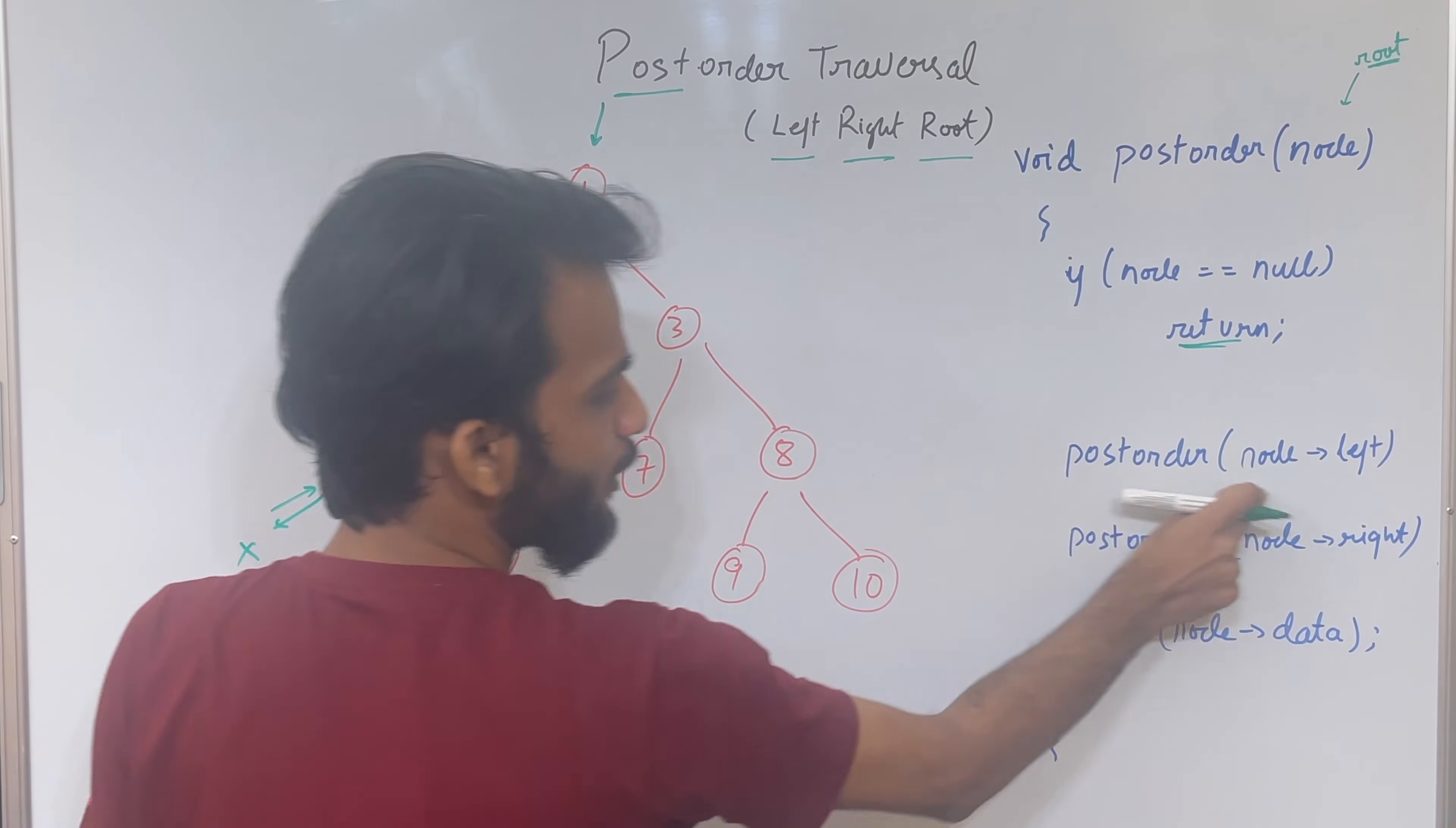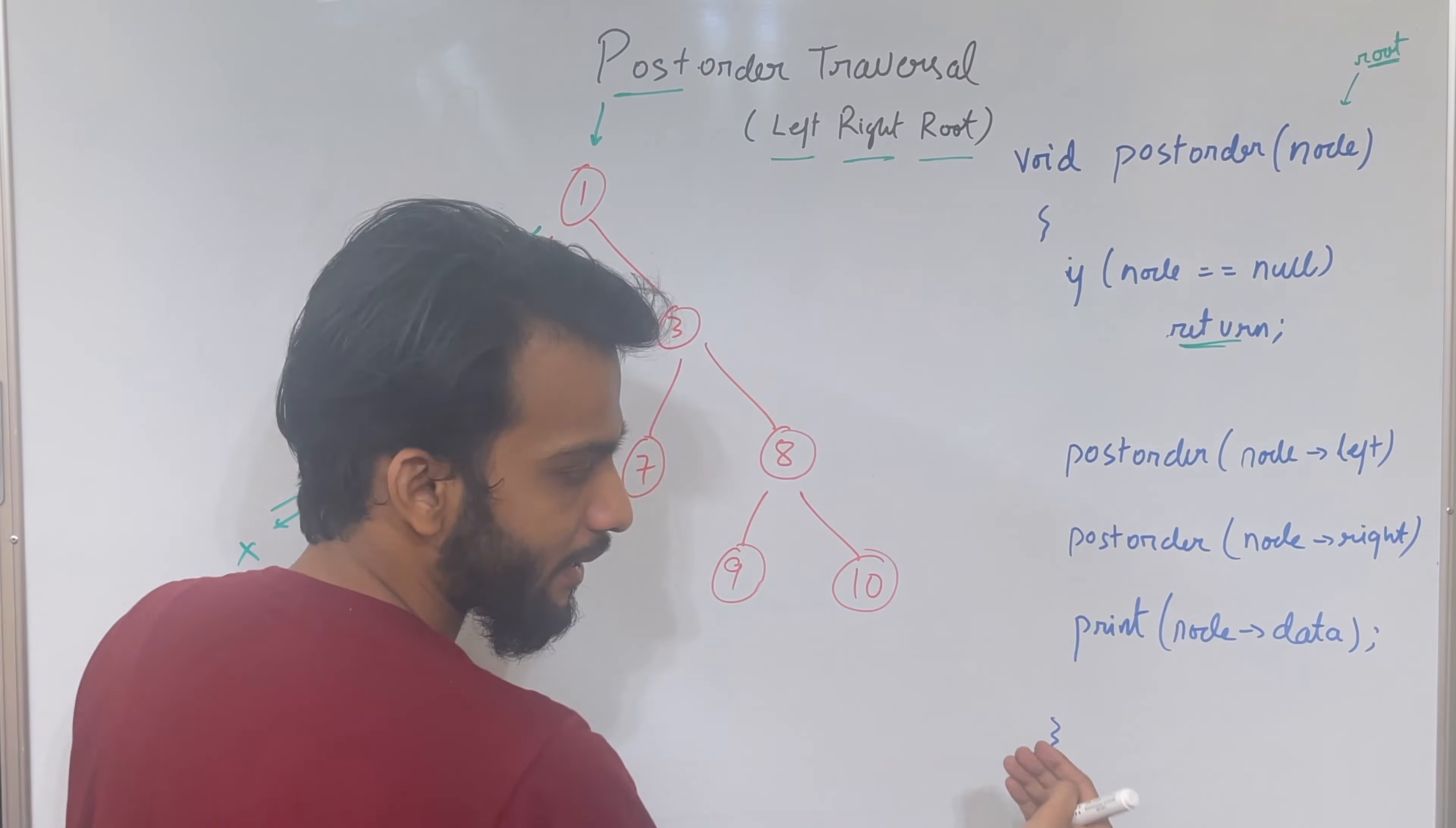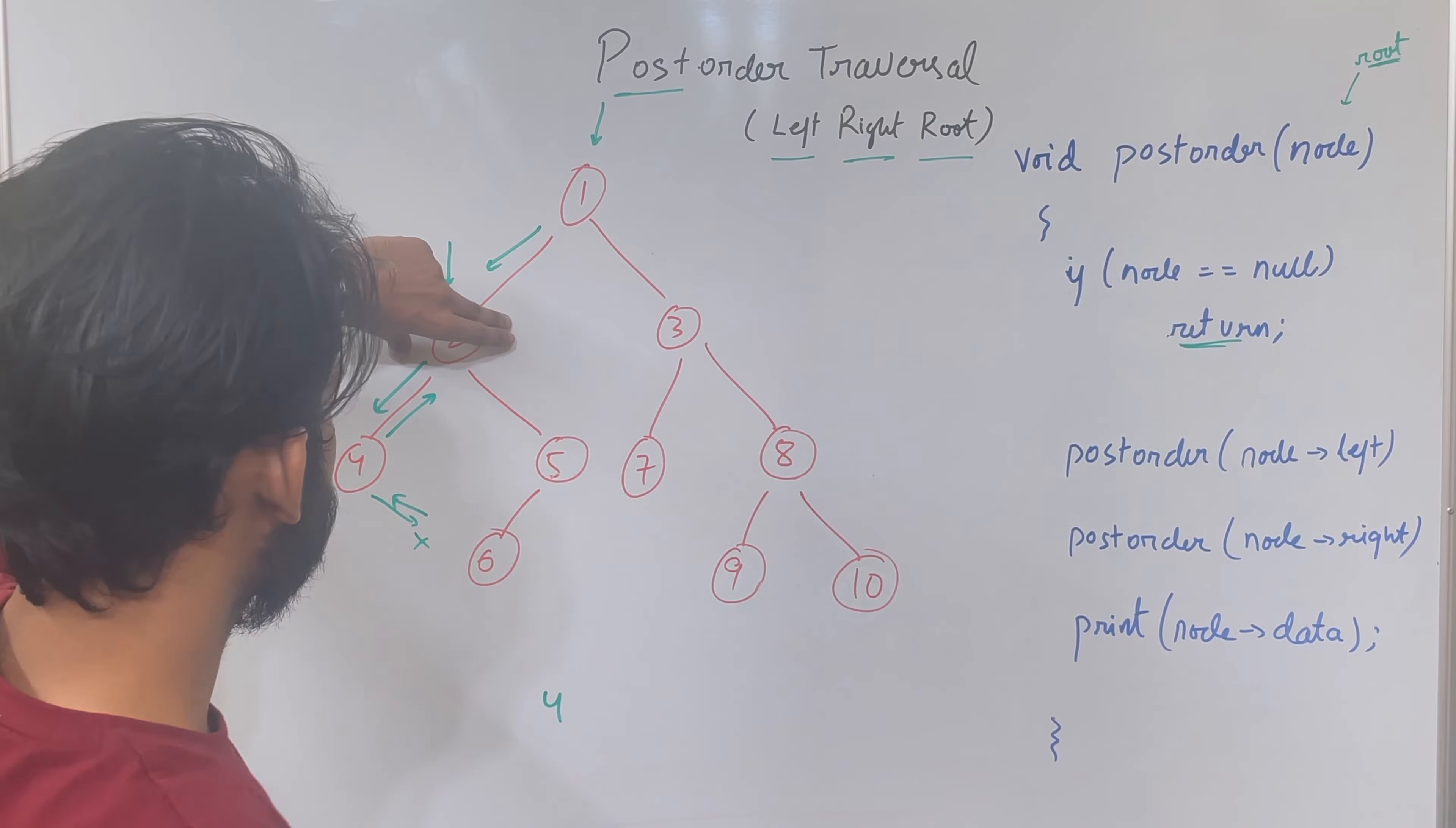So 4 says I went to left, now I'll go to right. So we'll go to right and I'll again see a null, and the moment it sees a null it returns. So 4 says I went to left, I went to right, and it came back. Now I'll print my data, so just print the data. So 4 will be printed. For 4, left is over, right is over, print is over, so 4 is over. It's time to go back. Now 2 says I have gone to my left, now I'll go to my right.